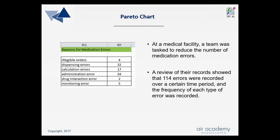Let's take an example of a team that was tasked to reduce the number of medication errors. They reviewed their records over a certain period of time and found that 114 errors were recorded. The frequency of each type of error was recorded, and the reasons include illegible orders, dispensing errors, calculation errors, etc., as you can see in the table on the left.